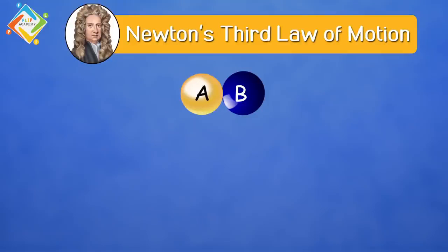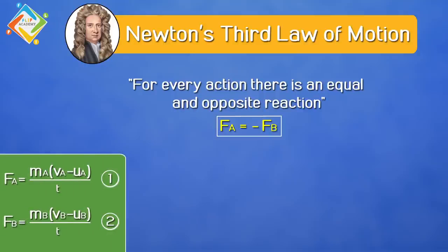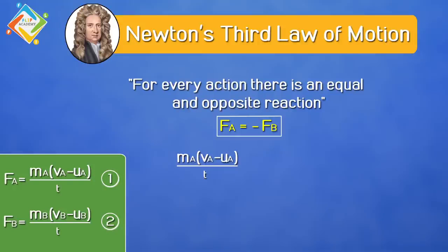Now during collision, here comes Newton's Third Law of Motion. According to the third law, for every action there is an equal and opposite reaction. Applying this law to this situation, for every force there is an equal and opposite force — that is fA = −fB. Substituting the values of fA and fB from the two equations already calculated, we get mA(vA − uA)/t = −mB(vB − uB)/t.